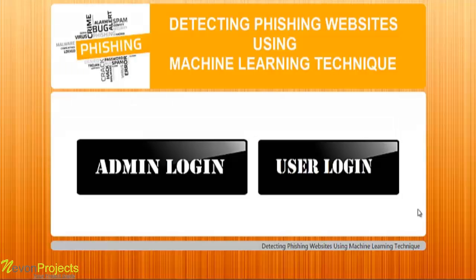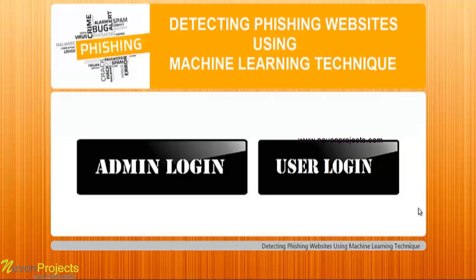This project is a demonstration of detecting phishing websites using machine learning techniques. Phishing websites can be detected based on some important characteristics like URL, domain identity, and security and encryption criteria. The system will use a data mining algorithm to detect whether the website is a phishing website or not, providing better performance compared to traditional classification algorithms.